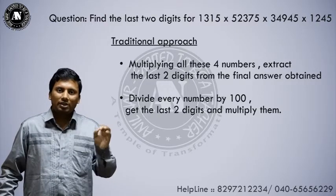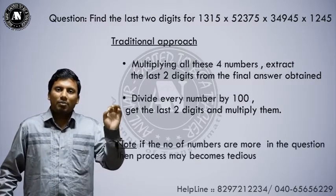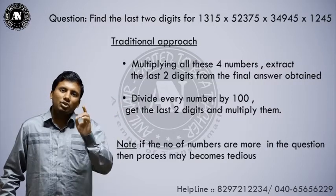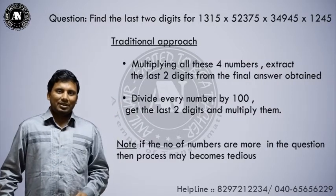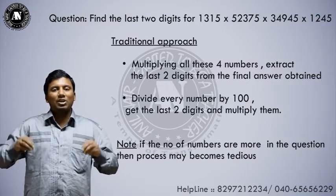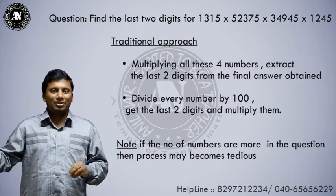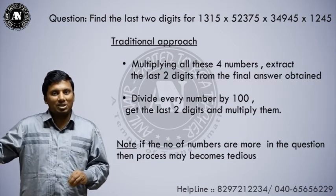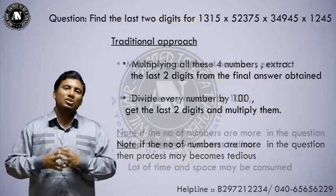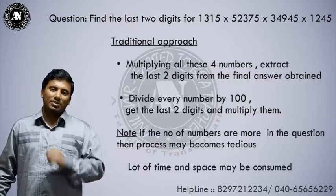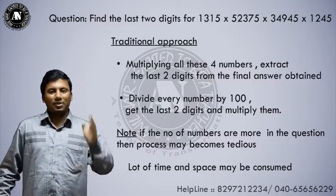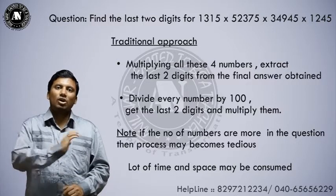One important note: when you divide a number by 100, we get the last two digits. But what if the number of numbers in the question is more than 4? There could be 6, 8, 10, 12, 200, or 300 numbers. Then this process becomes tedious — it will take a lot of time as well as space to solve the problem.